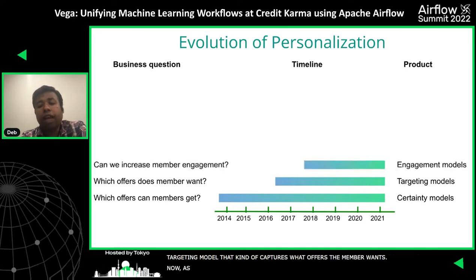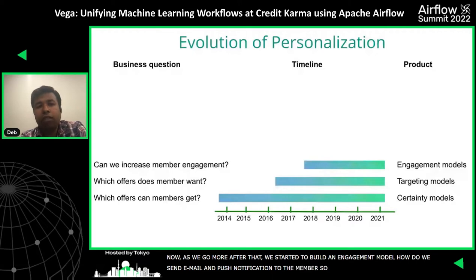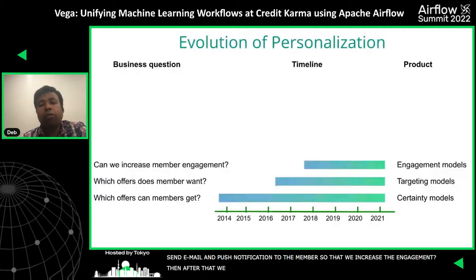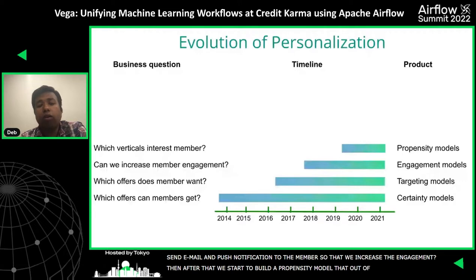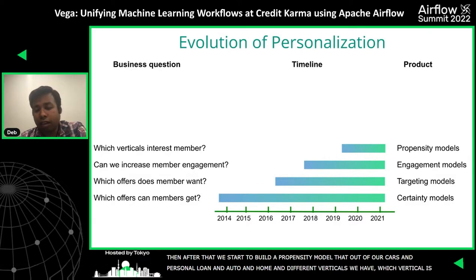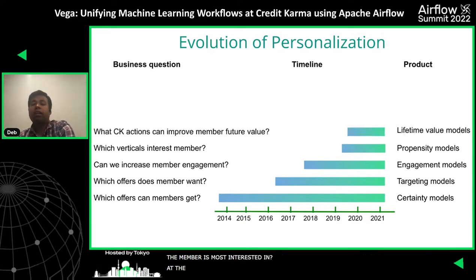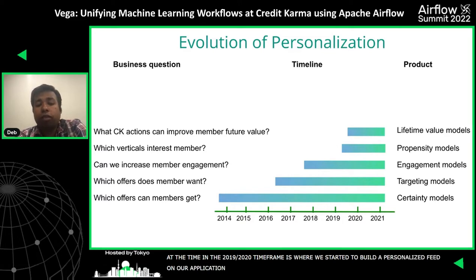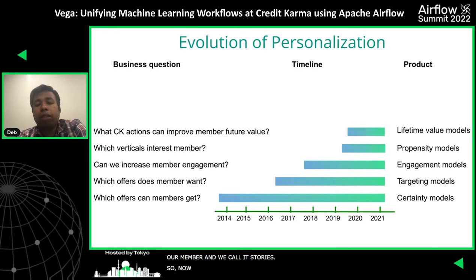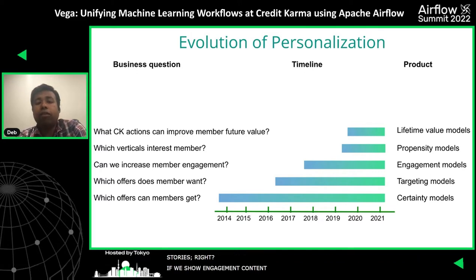After that, we started building engagement models — how do we send email and push notifications to the member so that we increase engagement. Then we started building propensity models: out of our cards, personal loan, auto, home, and different verticals, which vertical is the member most interested in. Then in the 2019–2020 timeframe, we started to build this personalized feed on our application, where we show personalized engagement content to our members, which we call stories. The problem then was: how do we find out the lifetime value for each of these stories? So that's where we started building lifetime value models.